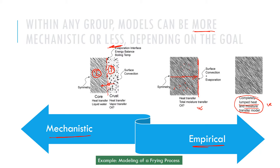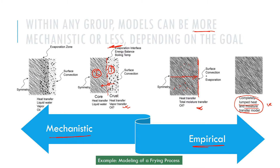That sharp interface model is more mechanistic than the previous diffusion model. Moving up to the most mechanistic approach, evaporation is distributed over a zone — technically over the entire domain, as it is in reality. It can be more at one point and less at another, but there is evaporation everywhere. As we move up in the mechanistic level, the computational challenges also increase.